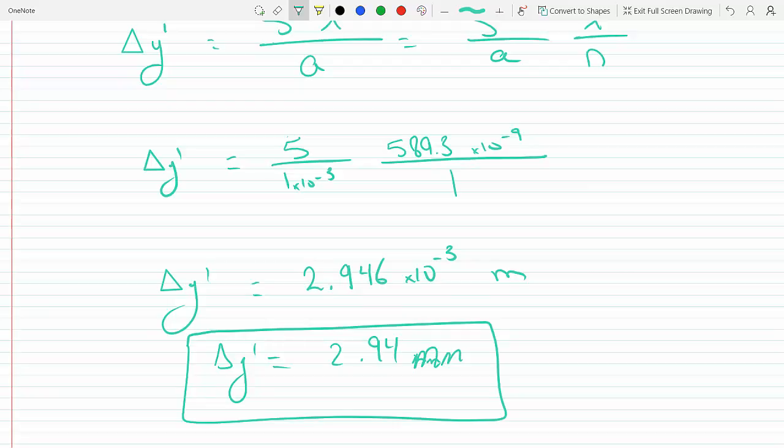There's also the slit separation. If you increase the slit separation, the fringe separation delta y will go down because it's inversely proportional to that. And the one we illustrated here, if you increase the wavelength, then the distance of separation between the fringes will also increase.